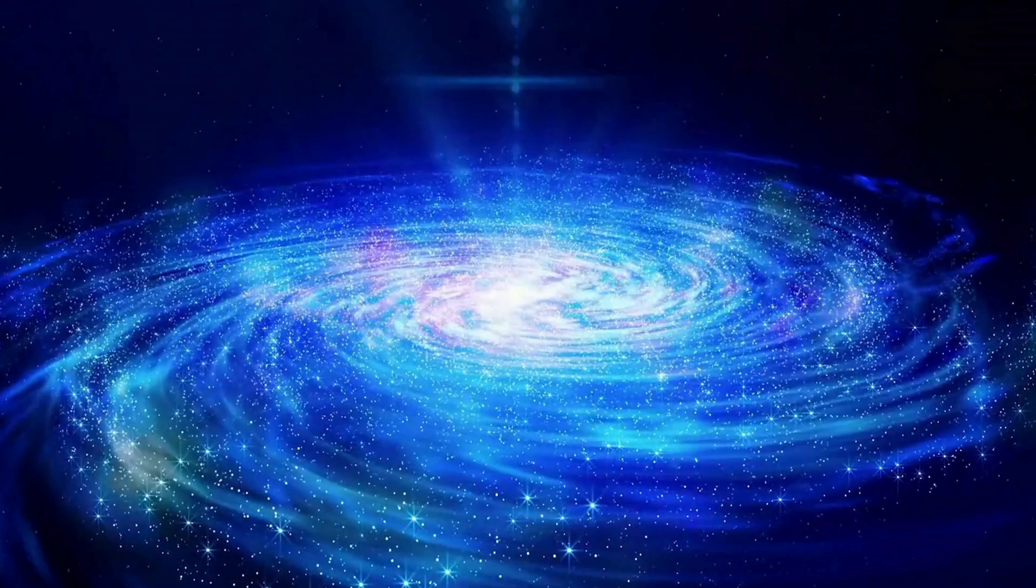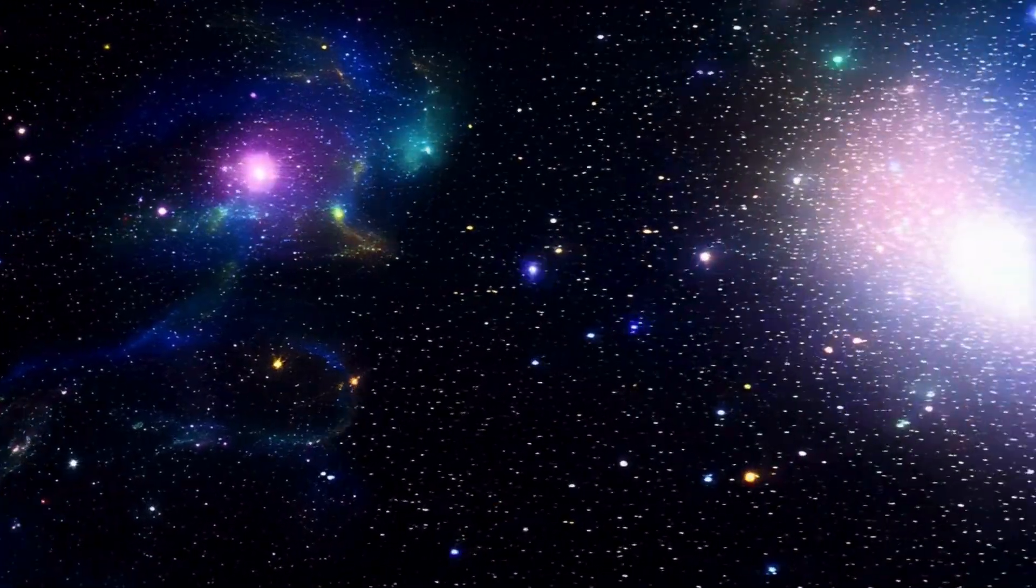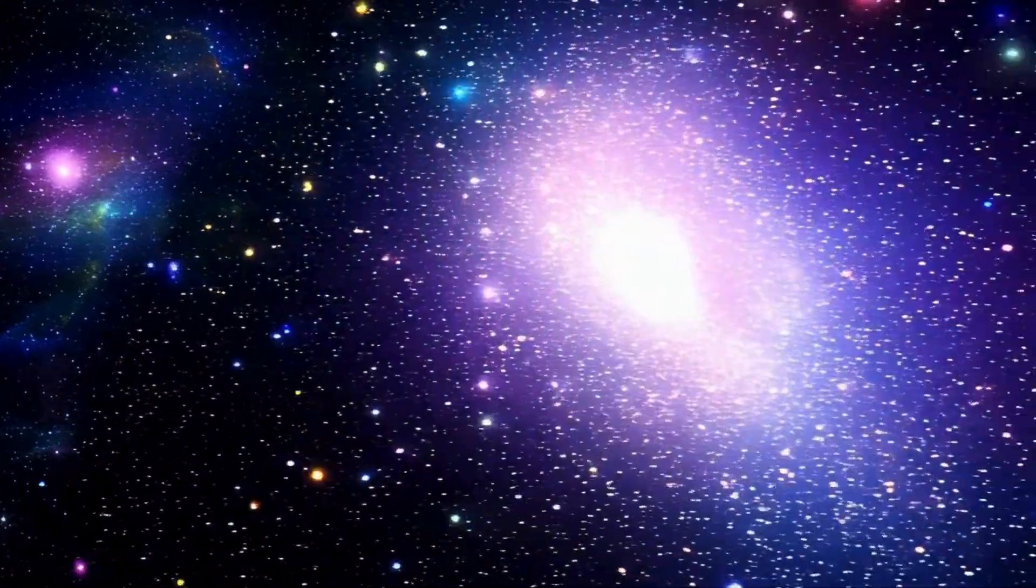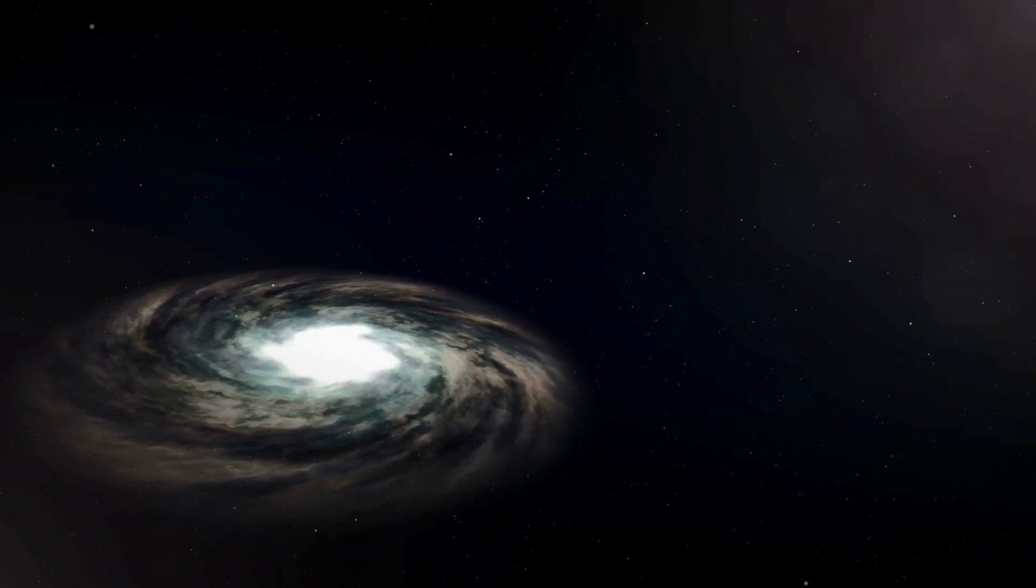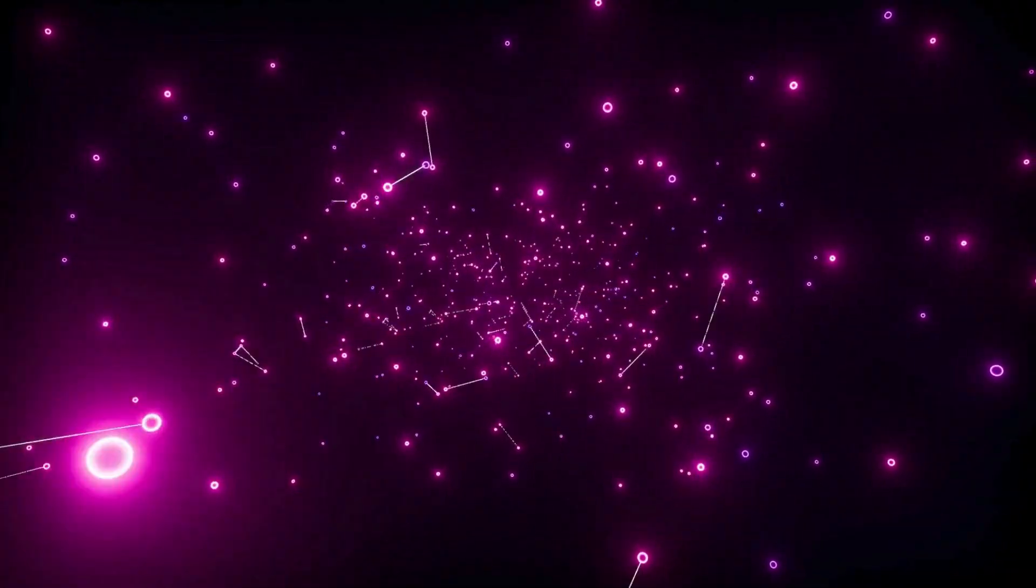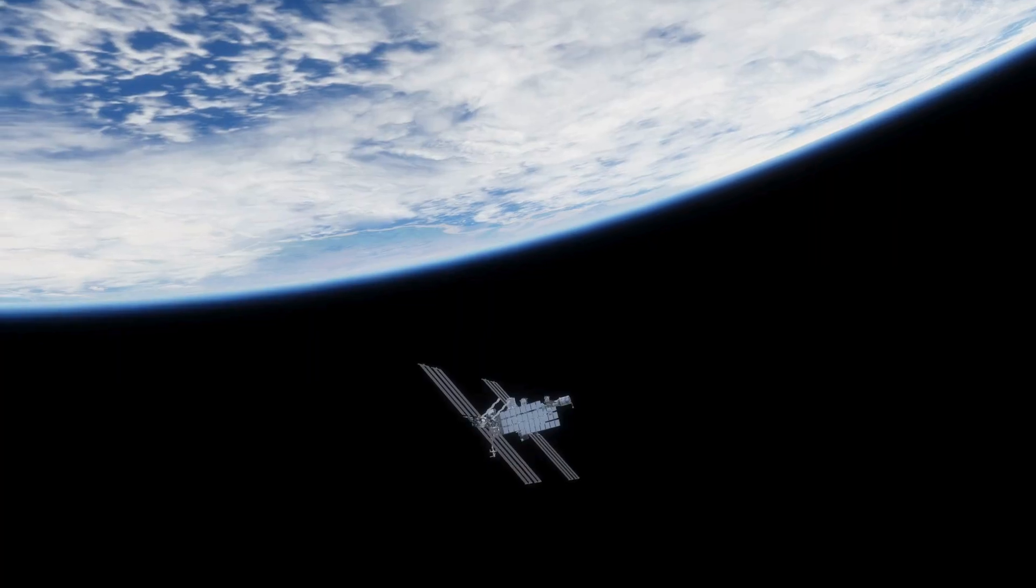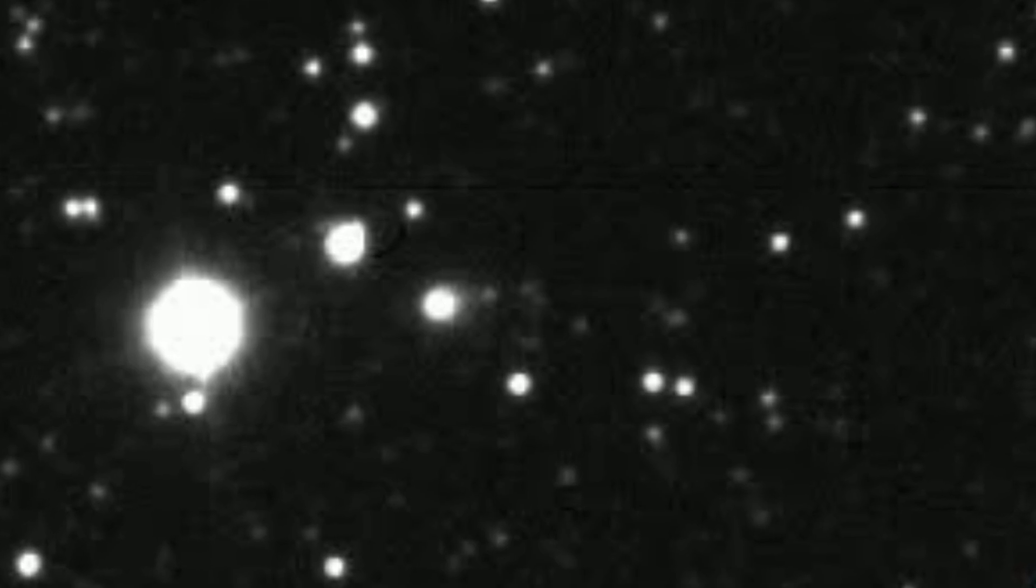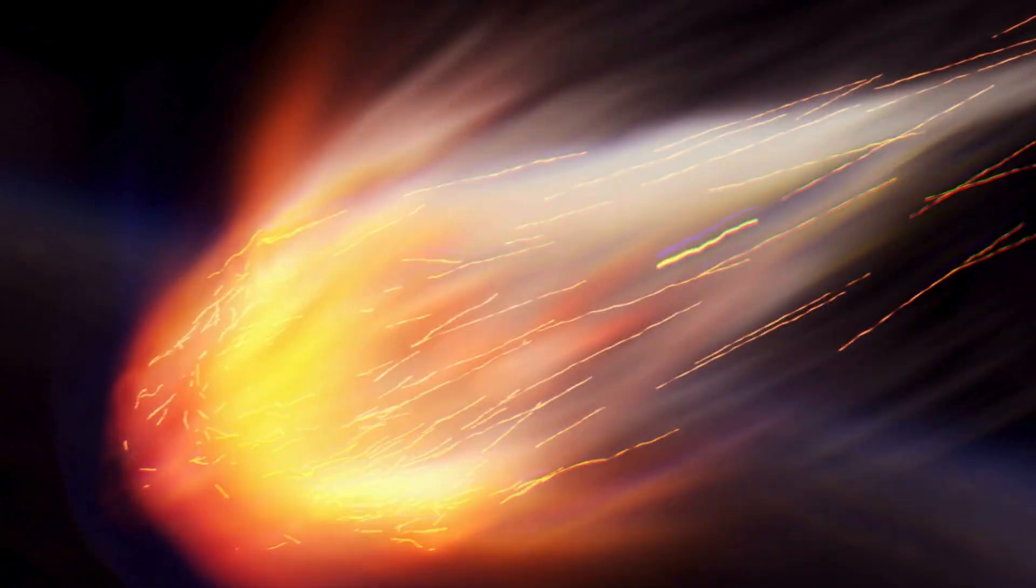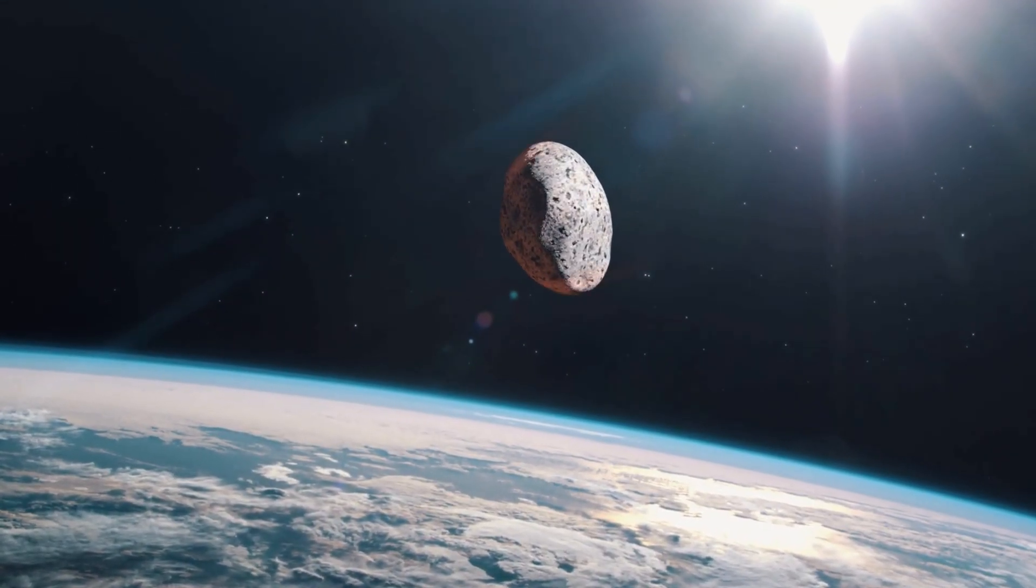So, where did this cosmic traveler come from? Astronomers traced its path back to the direction of the Milky Way's galactic core, that bright, star-packed region at the galaxy's heart. Picture the Milky Way as a spinning disk. We're out in a spiral arm and the core is the bustling center. But space is 3D, so let's flip to a side view. Most stars and planets hug a thin disk around the core, but there's a less crowded region called the thick disk above and below. That's where 3I-Atlas likely originated. An ancient, undisturbed region that could make this comet up to 7.6 billion years old, nearly twice Earth's age.